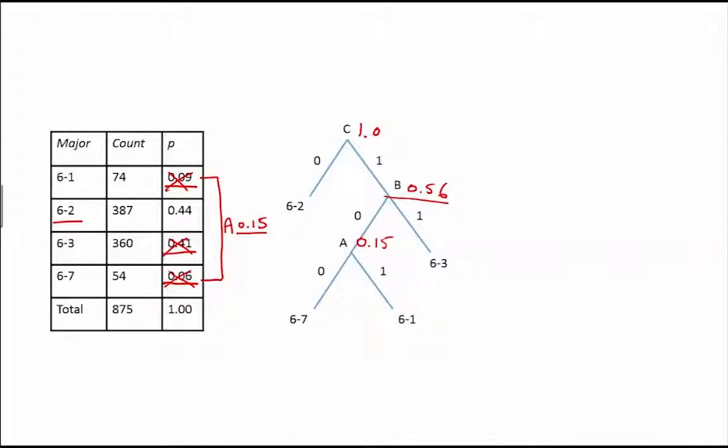Now that all the branches are labeled, we can traverse the tree from the root node to each leaf node in order to identify the encoding that has been assigned to the major associated with that leaf node. We find that for Major 6-1 the encoding is 1-0-1. For Major 6-2, we end up with a 1-bit encoding of 0. Next, we traverse the tree to identify the last two encodings and find that for Major 6-3, the encoding 1-1 has been assigned and for Major 6-7, the encoding 1-0-0 has been assigned.